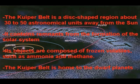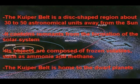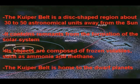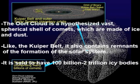Past the planets is the Kuiper Belt, a disk-shaped region of about 30 to 50 astronomical units away from the sun that contains remnants of the formation of the solar system. It is similar to the asteroid belt, only larger, and the objects inside the belt are composed of frozen volatiles such as ammonia and methane. The belt is also home to dwarf planets. Surrounding the solar system is a hypothesized, vast, spherical shell of comets, which are made of ice and dust, called the Oort Cloud. It too contains remnants of the formation of the solar system, and is said to be composed of 100 billion to 2 trillion icy bodies.